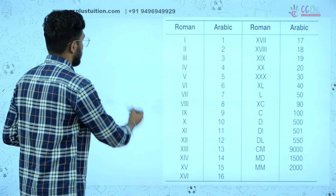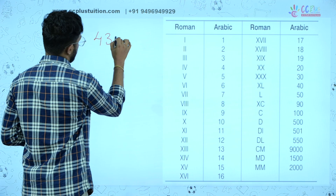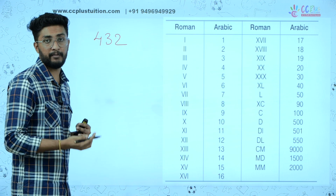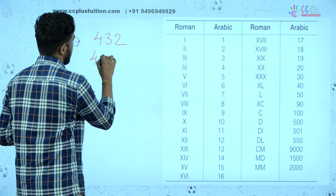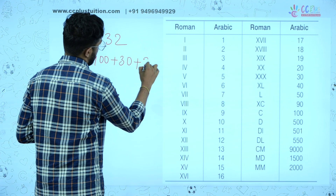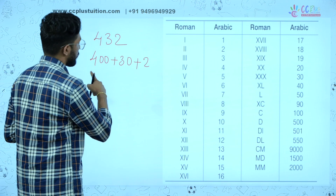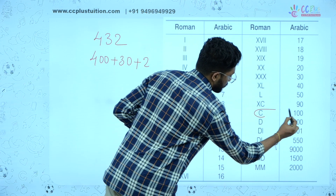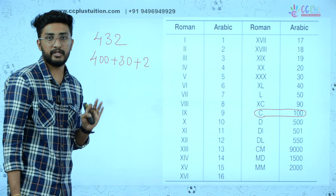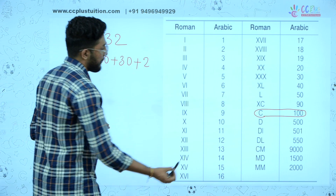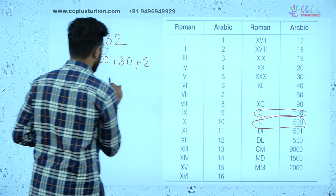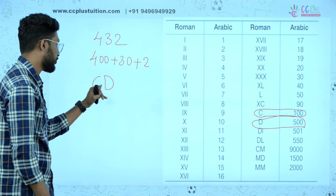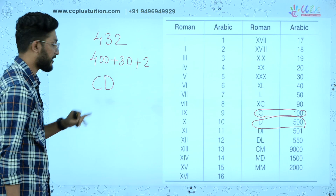If you ask about a question — let's go. 432. You can see it. What do you do now? Expanded form. If you expand 432: 400 is written as CD (500 minus 100, D minus C). 30 is XXX (3X). What is C? D is 500. 500 minus 100 is 400, so we write CD.